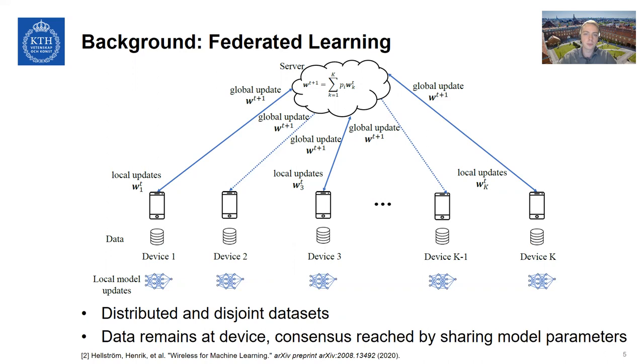Instead, consensus is reached by sharing model parameters. So what I mean by that is that each device trains the neural network using their own local data set, which generates a local update to the machine learning model. Then they transfer their local update to the server in the uplink, and the server will combine them using a weighted sum to generate the next iteration of the model. This model is then broadcasted down to the devices in the downlink, and the process repeats. The important feature here is that the server never actually needs to know any individual updates. It only needs to know this weighted sum. So over-the-air computation is appropriate for this application.